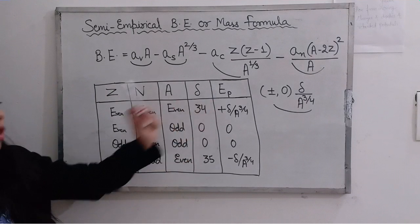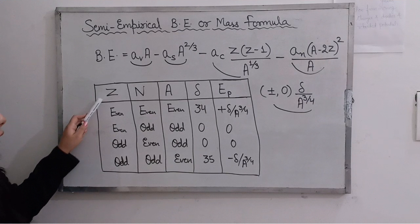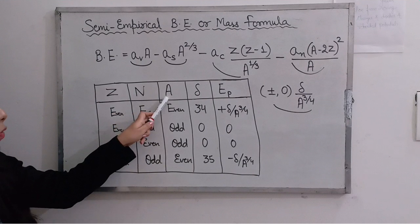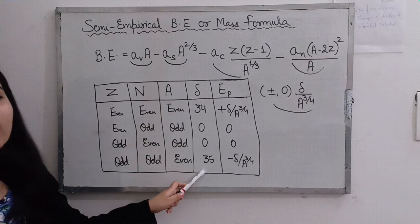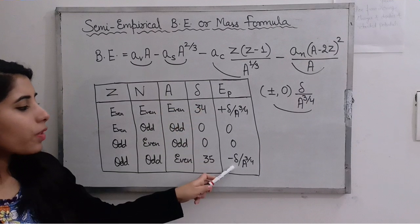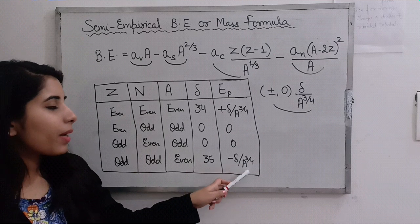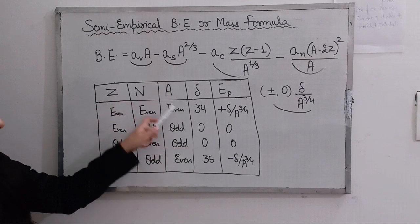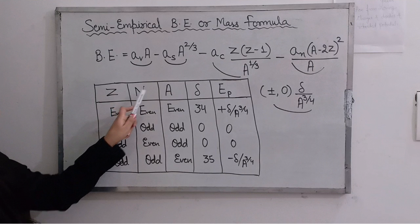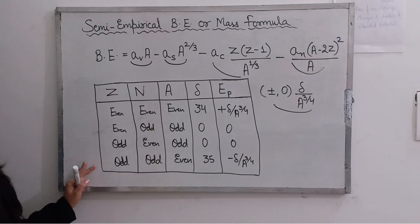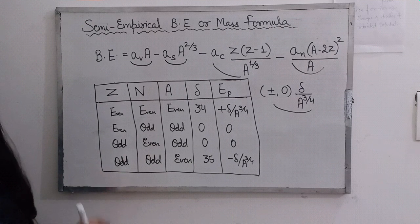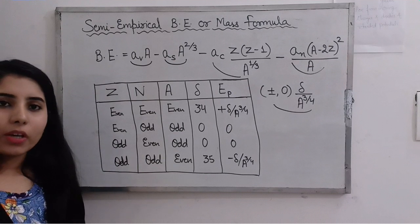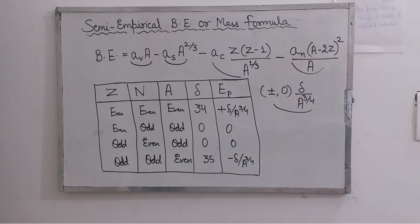Ep represents the pairing energy. After that, if the number of protons is odd, the number of neutrons is odd, and the number of nucleons is even, then delta will be equal to 35 and pairing energy will be equal to minus delta upon A to the power 3/4. So this way you will take delta's value depending on the values of Z, N, and A - where Z is the number of protons, N is the number of neutrons, and A is the number of nucleons. Let's now discuss one question based on this formula.